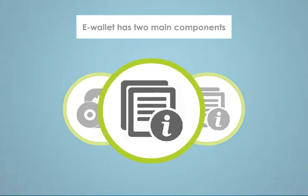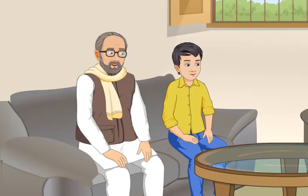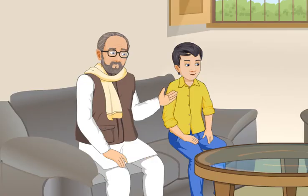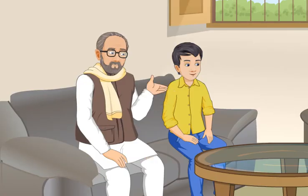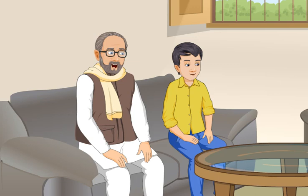The software component of an e-wallet stores personal information and enables security and encryption of the stored data. On the other side, the information component is a database of user details — it includes their name, shipping address, payment method, amount to be paid, and credit or debit card details. It seems interesting, but how can I use this e-wallet?